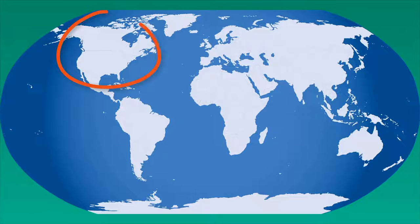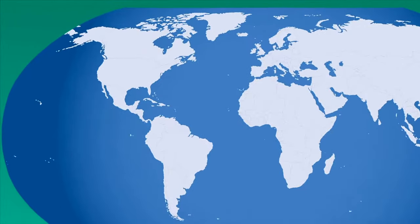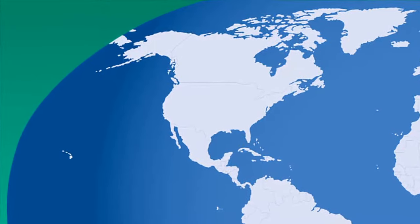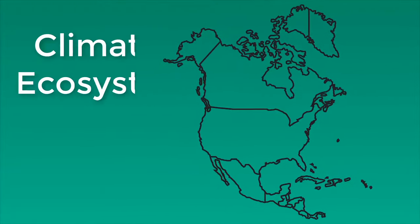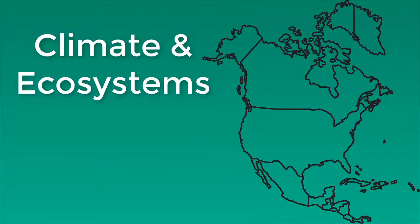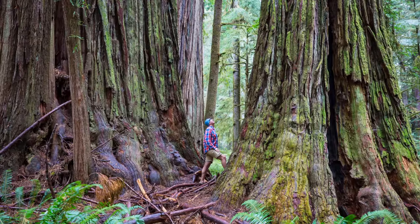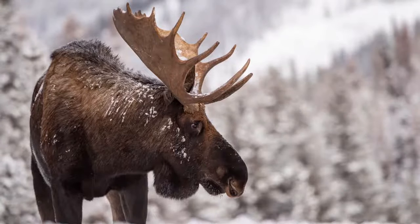Today we continue our study of the two largest countries in North America: Canada and the United States. And because the terrain in these countries is just as vast, varied, and complex as their climates, we can expect to find within their borders an impressive array of ecosystems too. Join me as we explore the climates and ecosystems of these unique regions and some of the people, plants, and animals living there.